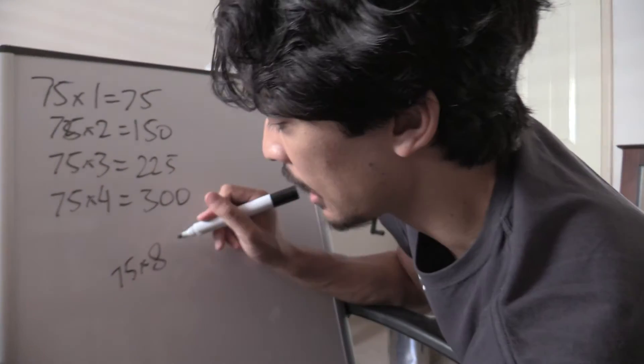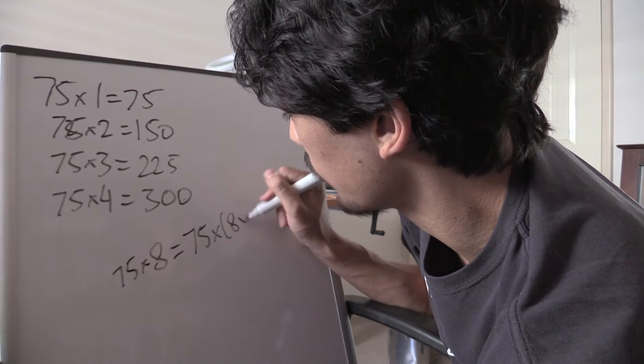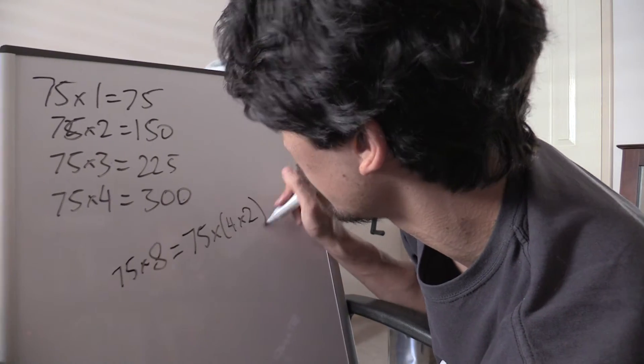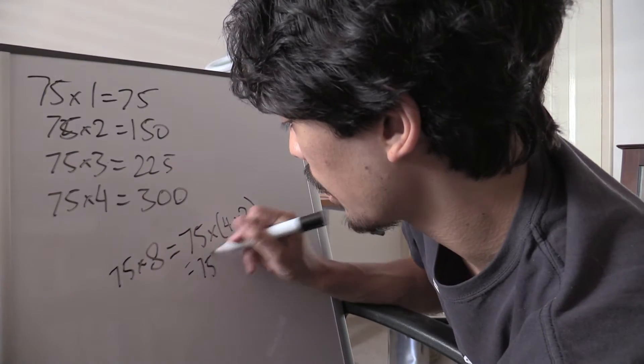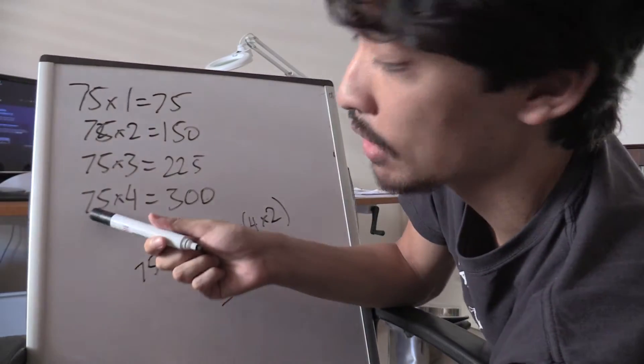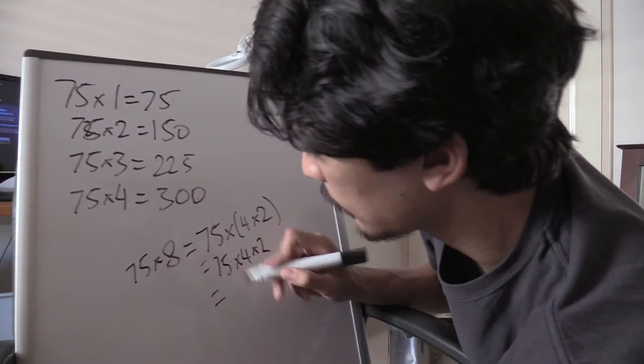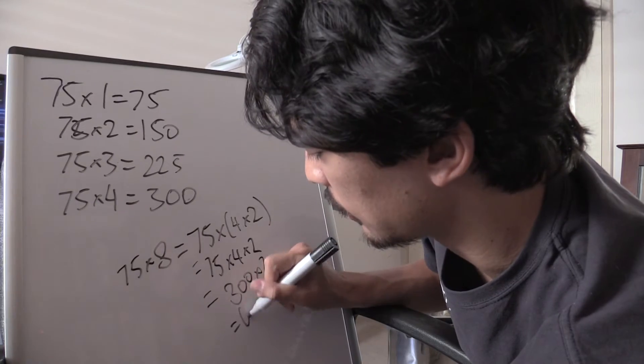75 times 8, that is equivalent to 75 times 4 times 2. Yeah, that makes sense, 4 times 2 equals 8. So then you just go 75 times 4 times 2 equals, because you know 75 times 4 is 300, this is why you need to know this stuff, and then that equals 300 times 2 which is 600.